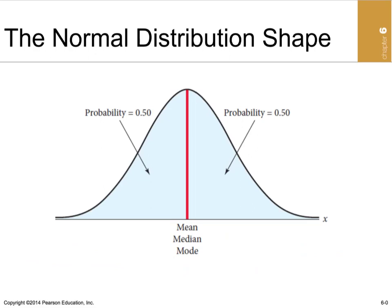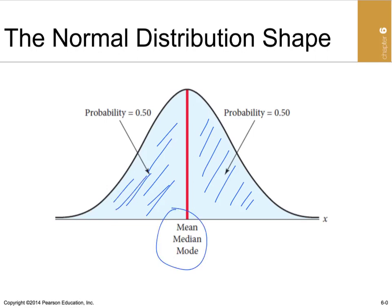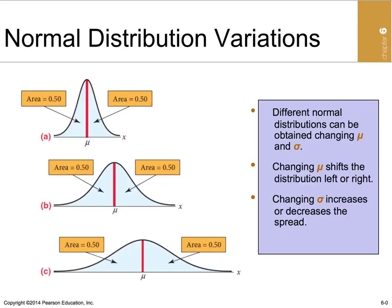The normal distribution is a bell-shaped curve, with the upper half comprising 50% and the lower half 50%. The mean, median, and mode are all equal. We can see different shapes depending on the mean and standard deviation — for example, curve C would have a large variance compared to curve A, even if they share the same mean. The standard deviation or variance determines the distinct shape of each distribution.